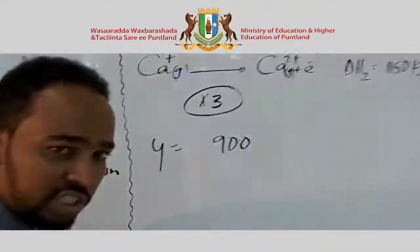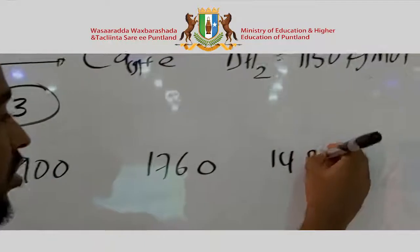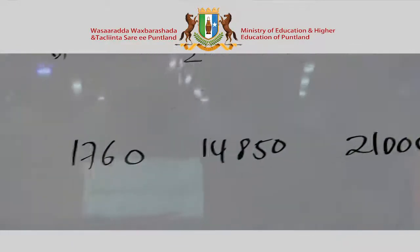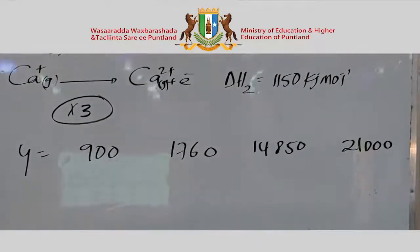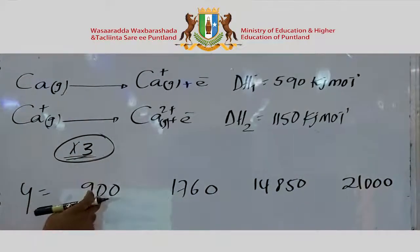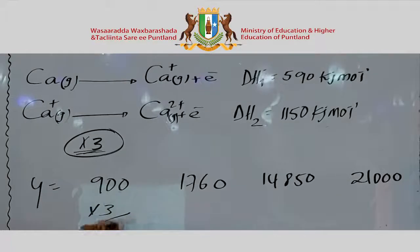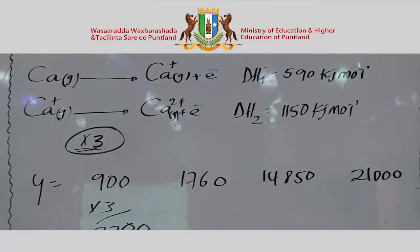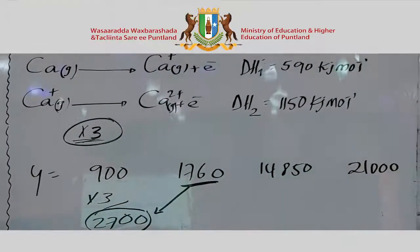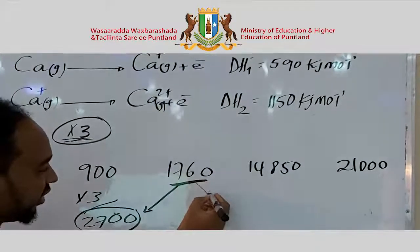Looking at the successive ionization energies — the first, second, third, fourth — when there is a large jump between two consecutive values, that tells us the number of outer shell electrons. For example, if there is a big jump after the second ionization energy, the element is in Group 2. The successive ionization energy data helps us identify the group of an element in the periodic table.